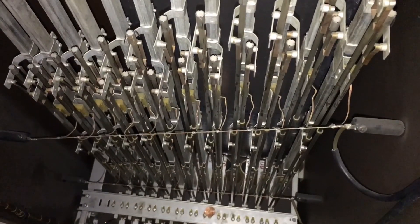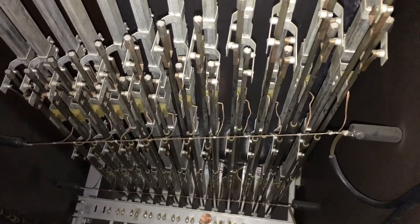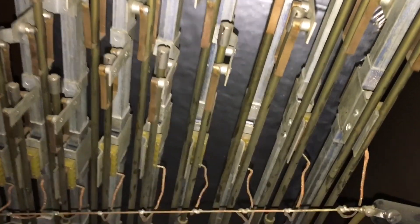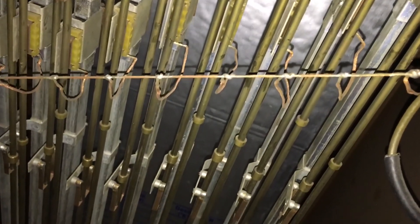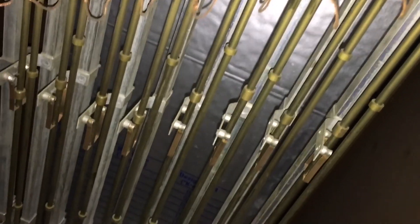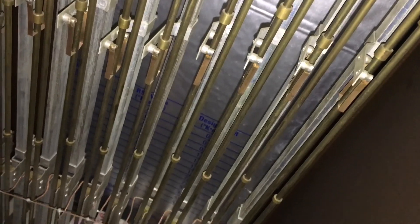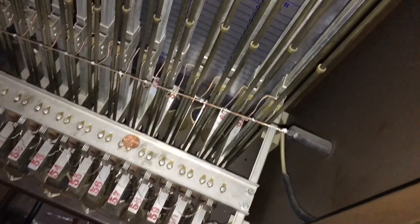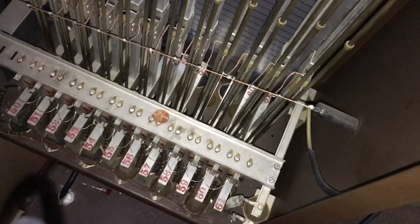Now we're looking at the lowest octave. These are quite tall. And there are stabilizers at various points along the rods. You can see the tuning weights very clearly there. And the striker is way down at the bottom.